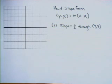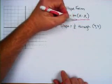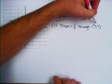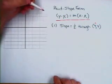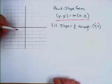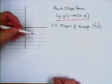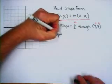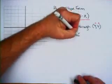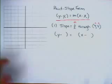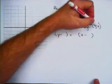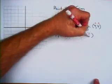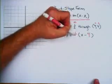Point-slope form — this is the formula for the point-slope form of the equation of a line, where x1 is the x of the given point, y1 is the y of the given point, and m is the slope. So we're going to plug that in to this particular formula. Y minus y1 equals m times x minus x1, where y1 is the y from the given point, x1 is the x of the given point, and m is the slope.